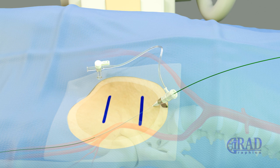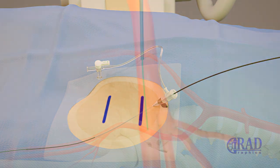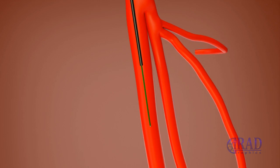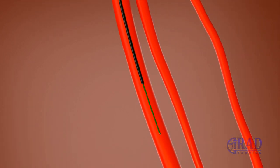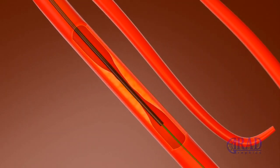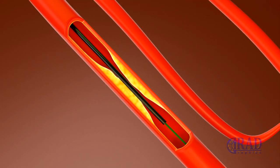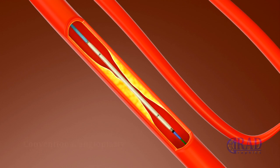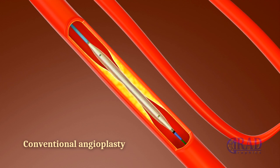An angled catheter is then advanced over the wire, through the sheath, and into the superficial femoral artery to cross the narrowed area and pass beyond the atherosclerotic lesion. The catheter is removed and an angiogram is performed to assess the nature of the narrowing and determine the appropriate intervention.